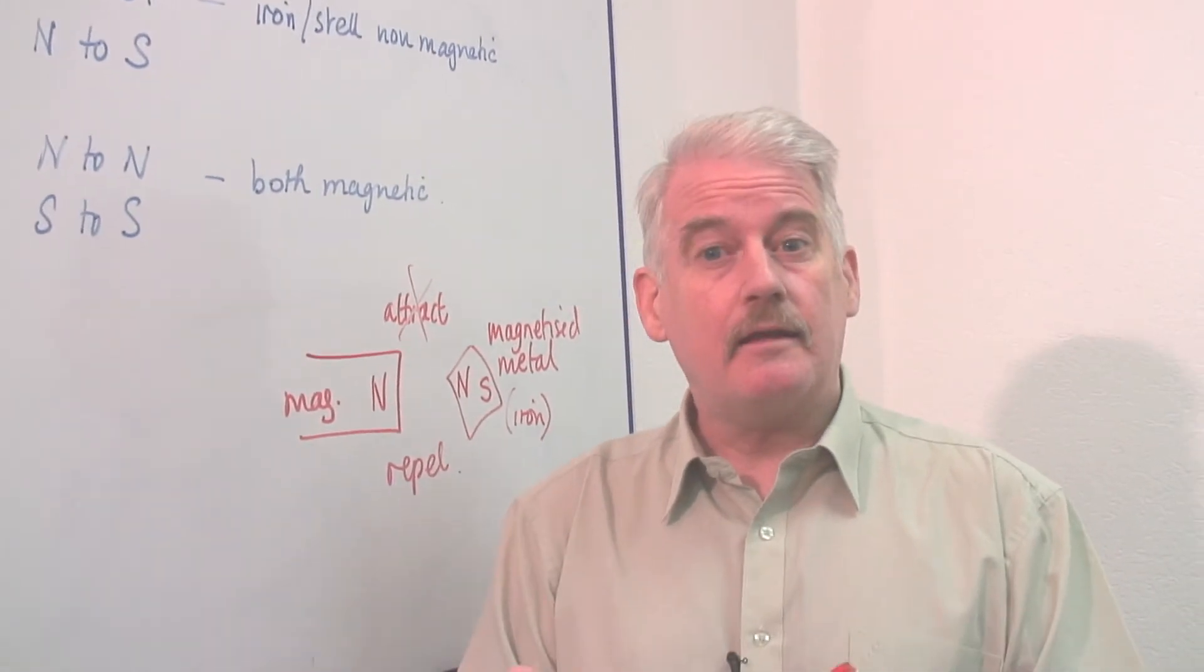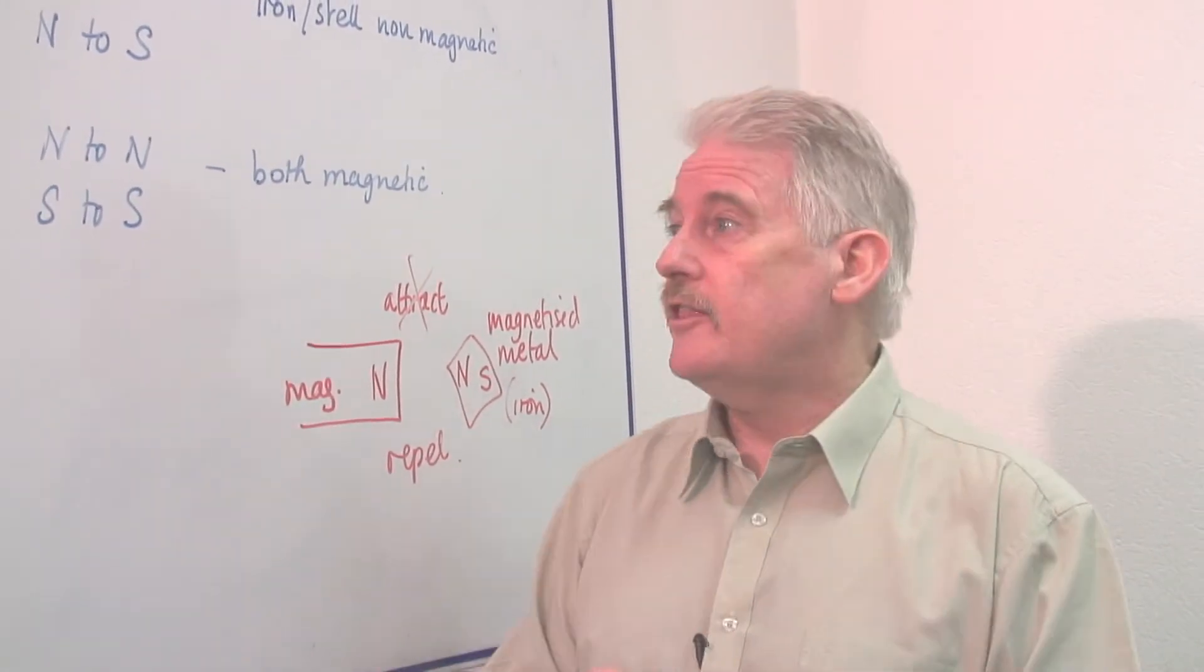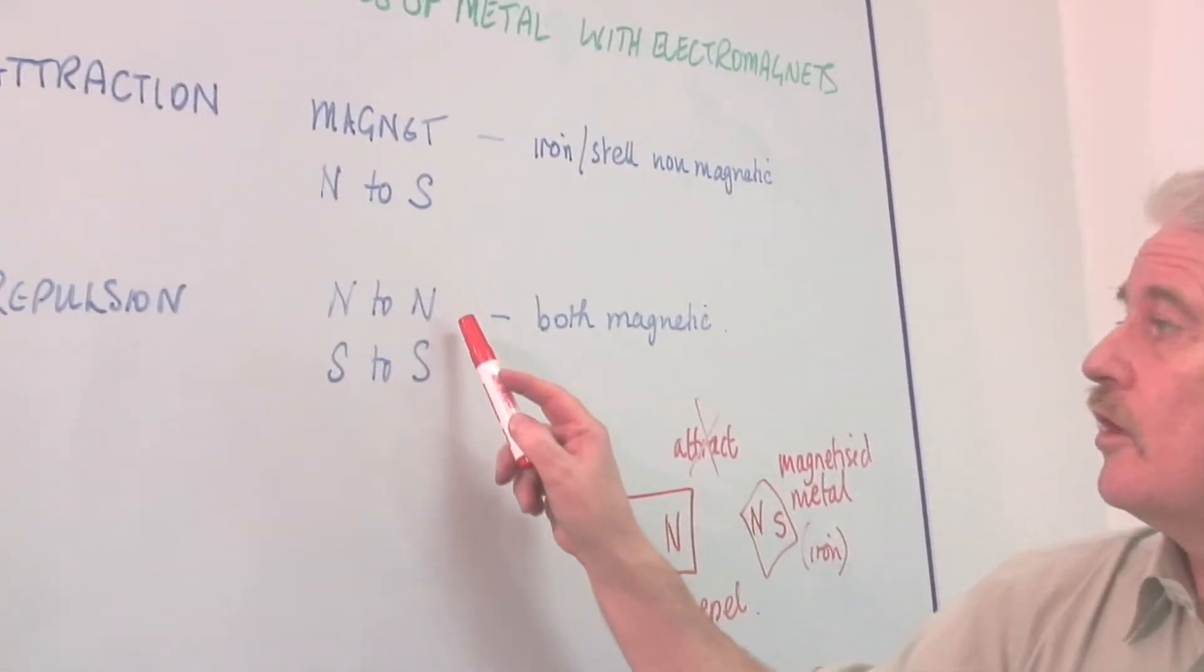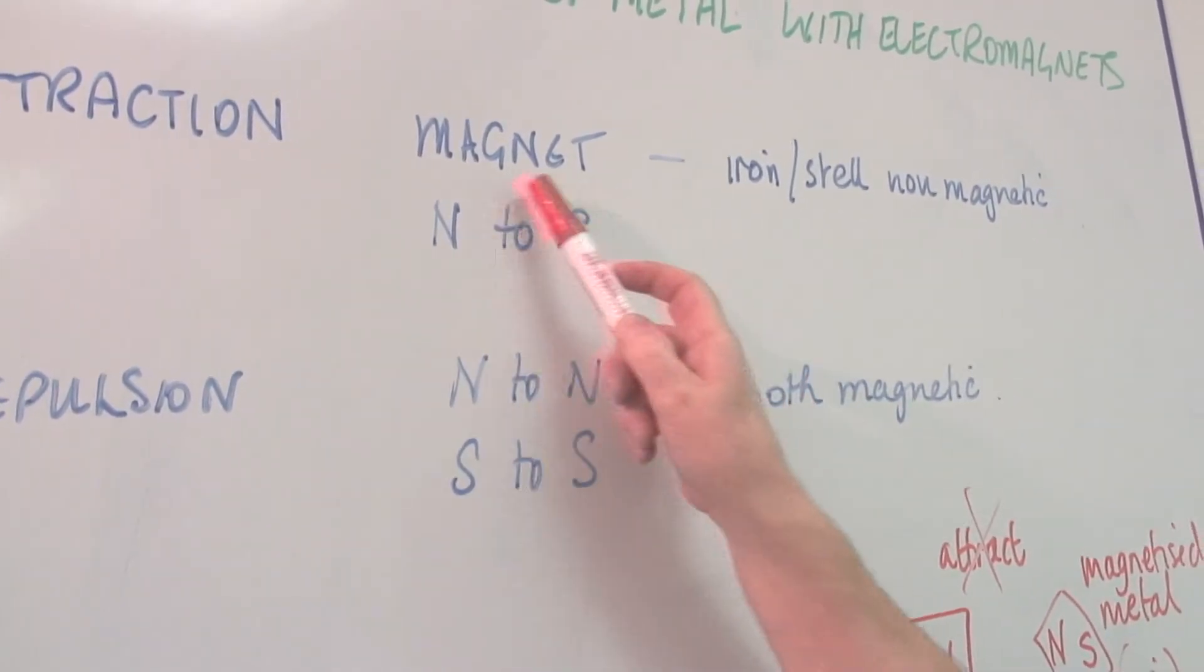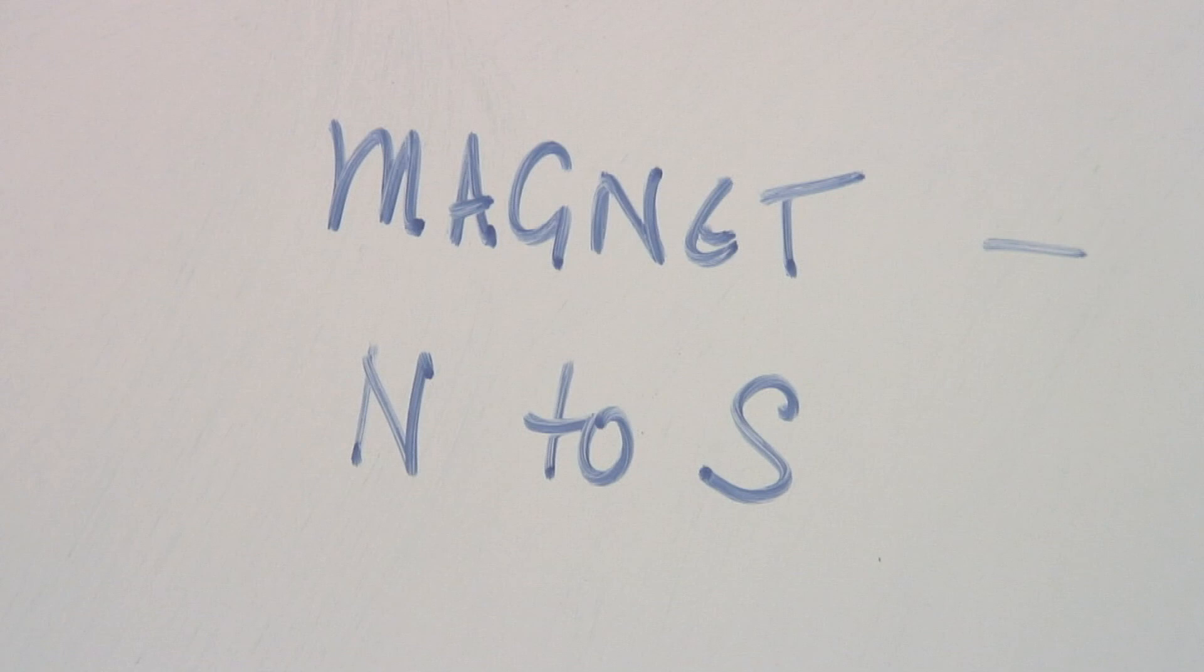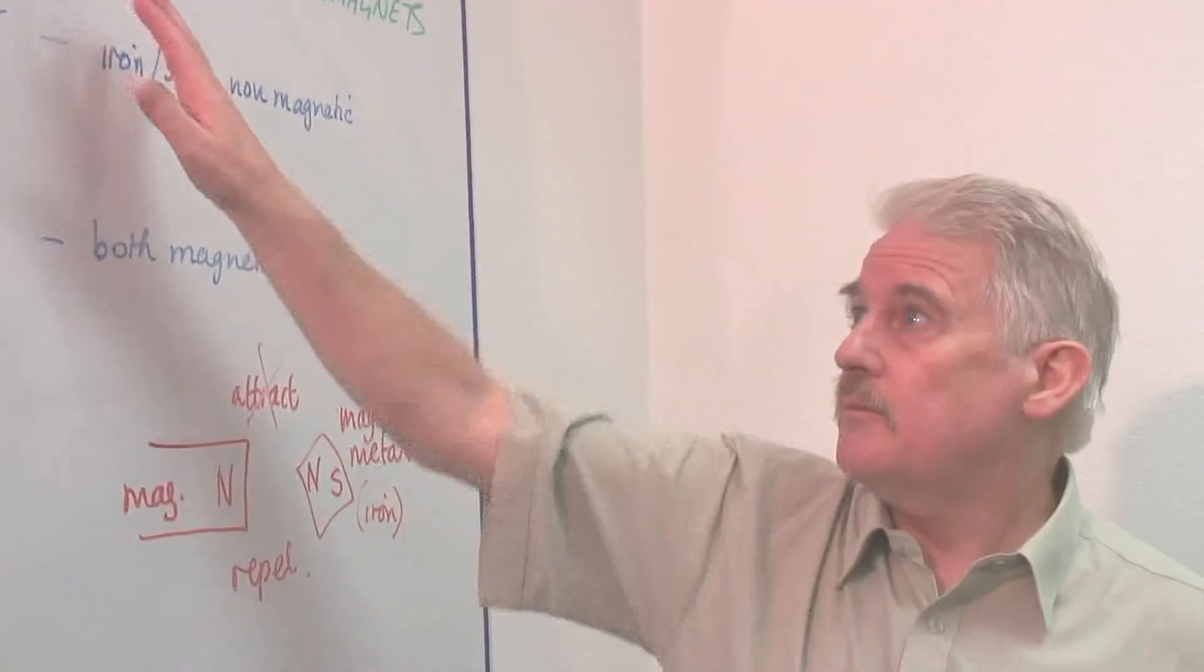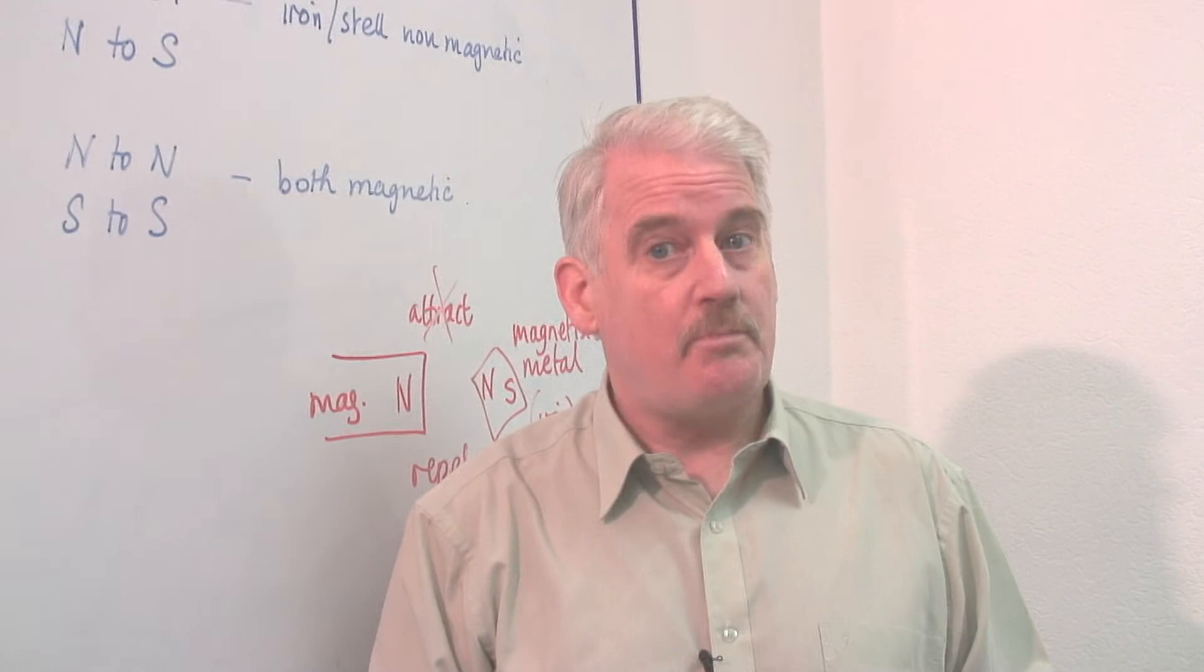It is by making them magnetic and then they will repel on the basis where a north pole repels a north pole, south repels a south. Otherwise it will attract north to south. So this is basically how we get a couple of pieces of metal to repel.